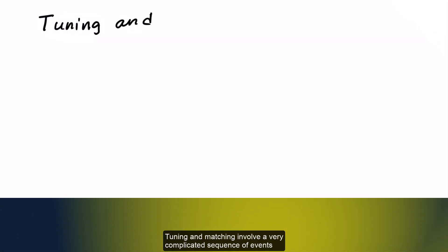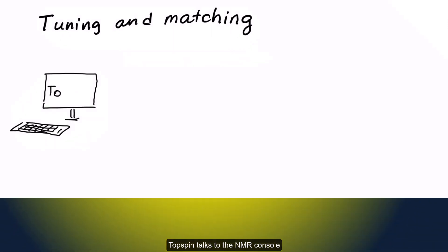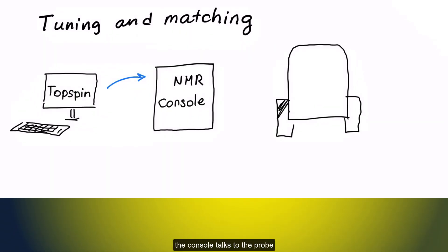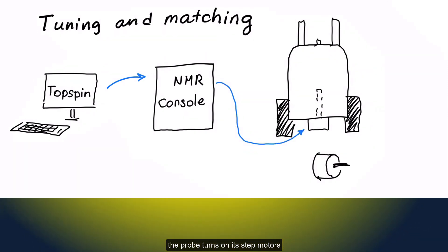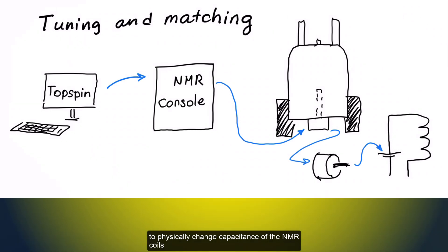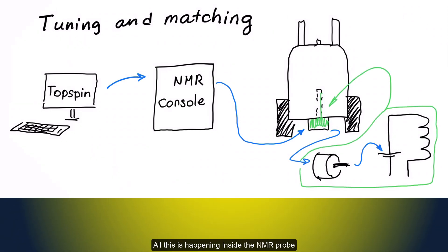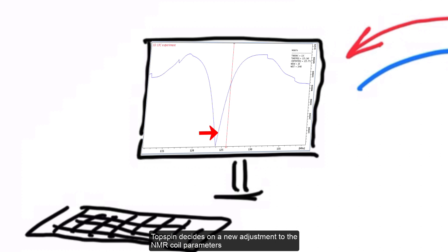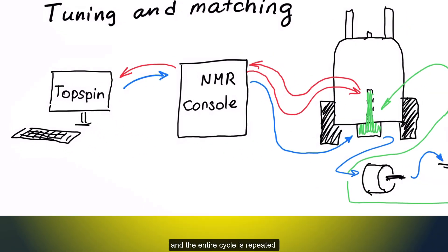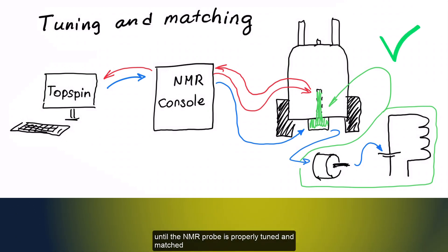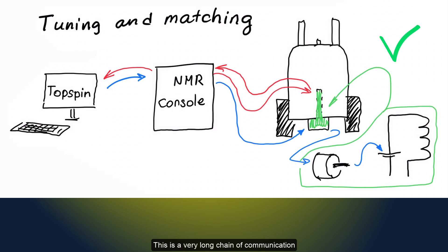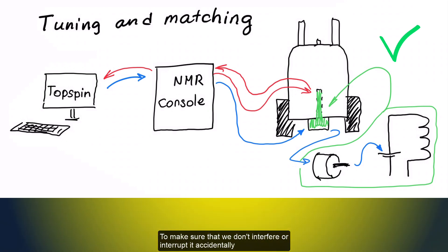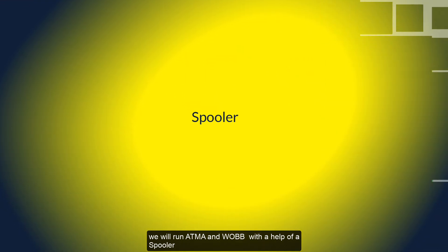Tuning and matching involve a very complicated sequence of events. Topspin talks to the NMR console. The console talks to the probe. The probe turns on its step motors to physically change capacitance of the NMR coils. All this is happening inside the NMR probe. Once the coils are adjusted, the console measures a new resonance curve, we call it a wobble curve, and sends it back to topspin. Topspin decides on a new adjustment to the NMR coil parameters, and the entire cycle is repeated, until the NMR probe is properly tuned and matched. This is a very long chain of communication. To make sure that we don't interfere or interrupt it accidentally, we will run ATMA and wobble with the help of a spooler.